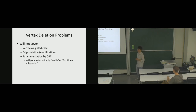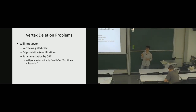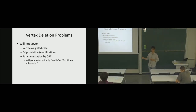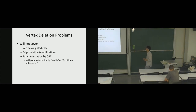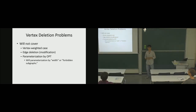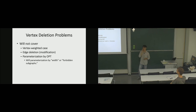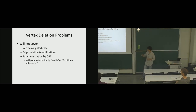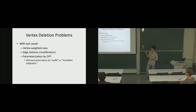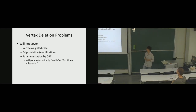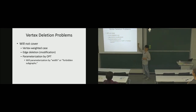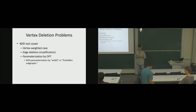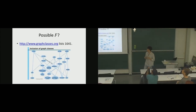Let me say what I will not cover. We are interested in the number of vertices to delete — I'm not going to talk about the vertex-weighted case or edge deletion. I'm also not going to talk about parameterization by OPT. Instead, if F is characterized by some forbidden graphs, forbidden minors, or graph width parameters, I'm willing to parameterize by those. So it's a very mild parameterization, more like an approximation.